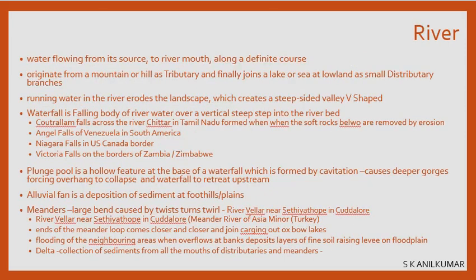These are the reasons why landforms on Earth keep changing over time due to the forces acting upon them. A river is water flowing from its source to the river mouth. The source is one important place and the river mouth is another. Water must flow along a definite course for us to know where the river is.